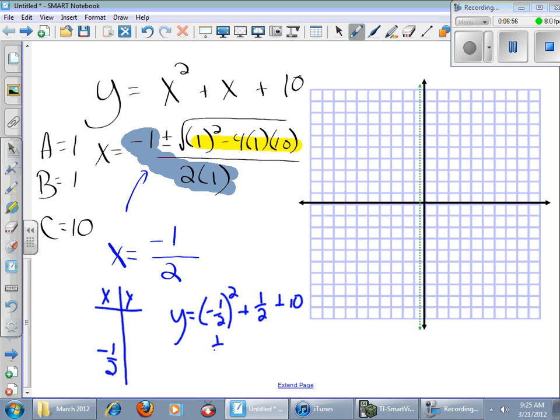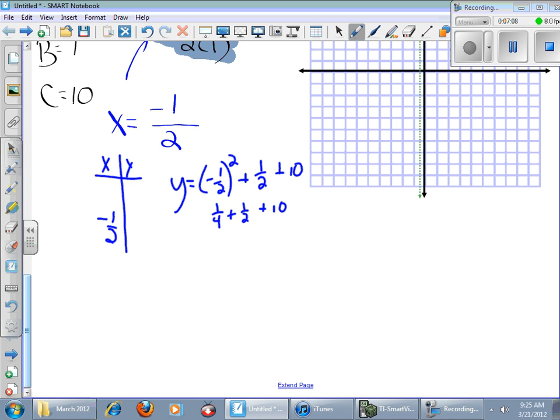Now I'm going to go to my t-table. x, y, and I'm going to put in negative 1 half, which means I'm going to plug negative 1 half in for x to solve for y. Negative 1 half squared plus 1 half plus 10. This is going to be 1 fourth plus 1 half plus 10.